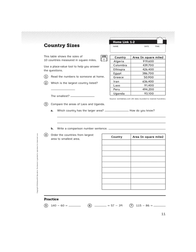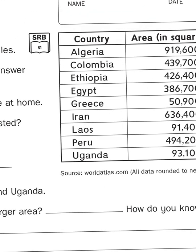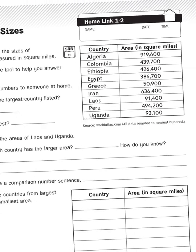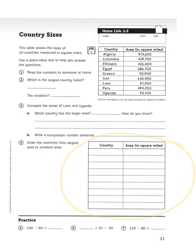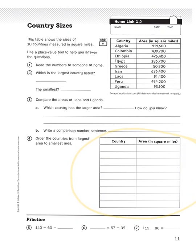Take a look at the instructions at the top. This table shows the sizes of 10 countries measured in square miles. You'll notice that those country names are organized in alphabetical order — that is one way to organize data. Down here at the bottom, however, they're going to ask you to organize that information in a different way: not by the name of the country, but the size of the country and area in square miles.